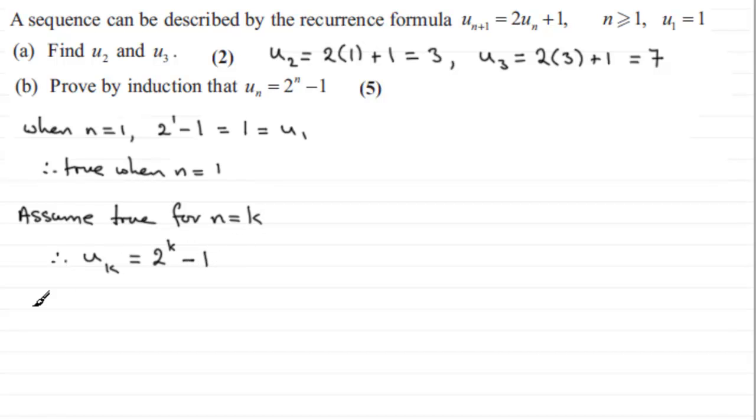So we now need to look at what happens when n equals k plus 1. So when n equals k plus 1, we can now turn to this recurrence formula that we were given. We can say that therefore u k plus 1, the k plus 1 term in the sequence, is equal to 2 u k, the kth term in the sequence, plus 1.